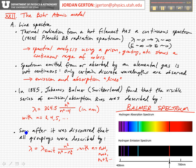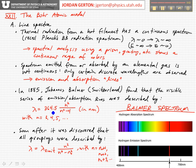Each one of these lines — as n gets bigger, the wavelength gets shorter, and you can see that they start getting closer and closer together. They start to converge to a wavelength equal to 364.5 nanometers.